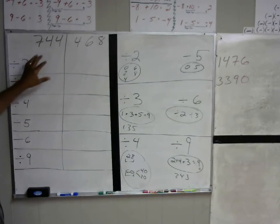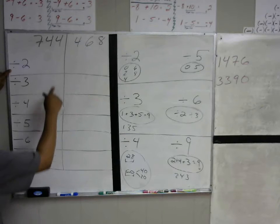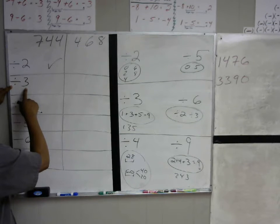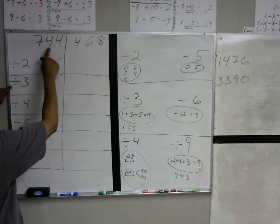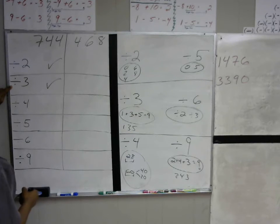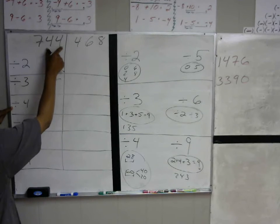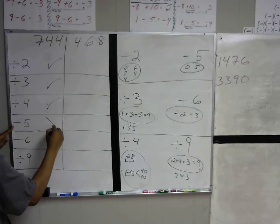Let's take a look at these numbers. Is 744 divisible by 2? The last digit is in the two times tables, so the answer is yes. Is it divisible by 3? Let's add up the digits: 7 plus 4 plus 4 — 7 plus 4 is 11, and 11 plus 4 is 15. 15 is in the three times tables, so it can be divided by 3. Can it be divided by 4? We look at the last two digits: 44. Is 44 in the four times tables? Yes, so this can be divided by 4. Can this be divided by 5? Does it end in a 0 or a 5? No, so this one is no.